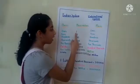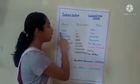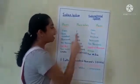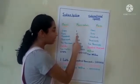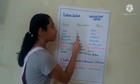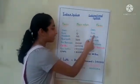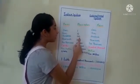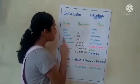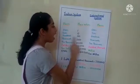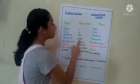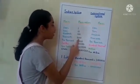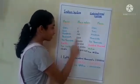Here is 1. In both the systems, we call it Ones. Here is 10. In both the systems, we call it Tens. Here is 100. In both the systems, we call it Hundreds. Here is 1000. In both the systems, we call it Thousands.